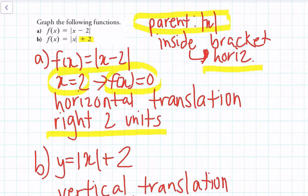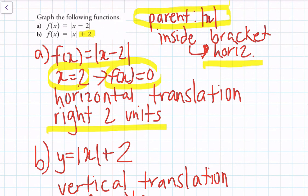Our parent function is the absolute value of x. If the change is inside the bracket, that means it's a horizontal transformation; if it's outside the bracket, it's a vertical transformation. For Part A, we're dealing with a horizontal transformation. Find the value of x that makes f of x equal zero — putting in x equals 2 makes f of x equal zero, so this is a horizontal translation right two units.